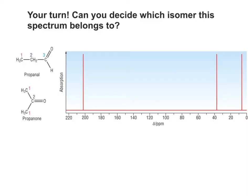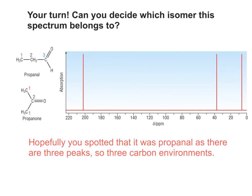It's your turn to have a think about this. This spectrum belongs to a compound that has a molecular formula of C3H6O, which is either one of those two possibilities. Which one is it actually going to be? Pause the video and have a think about this. Hopefully you were able to see that it was going to be propanal. There's three peaks, so three carbon environments.